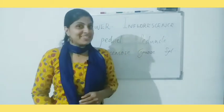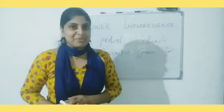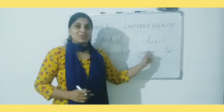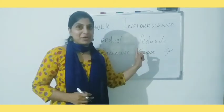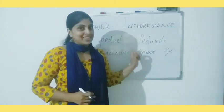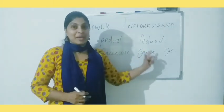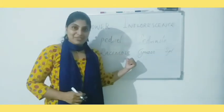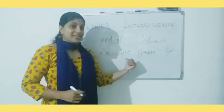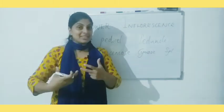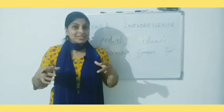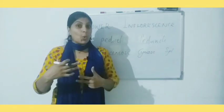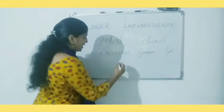The three types are racimose, cymose, and special types of inflorescence. Racimose and cymose are the two types included in plus-one biology, so we will discuss racimose and cymose. In the case of racimose inflorescence, a main axis is present and many flowers are born on that axis, as the axis grows continuously.